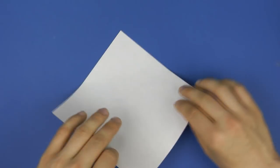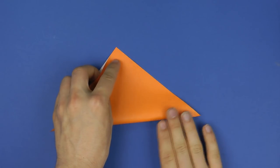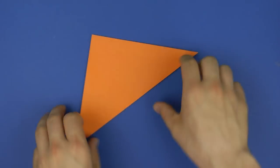Any square sheet will do. If it has two colors it will look a little nicer and you begin by folding it diagonally in both directions.